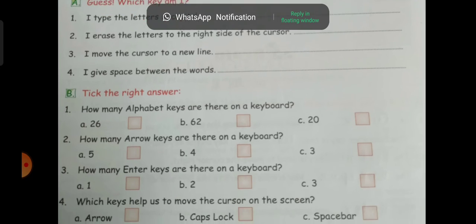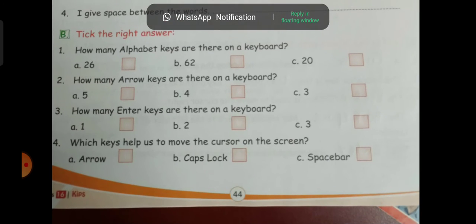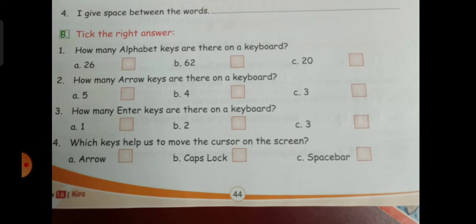Third: 'I move the cursor to a new line.' I hope you know the answer very well, so you will try to attempt it yourself. Fourth: 'I give space between the words.' This you can also do. Now I'm coming to the MCQ part. First: How many alphabet keys are there on a keyboard?